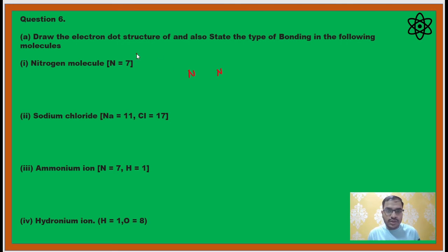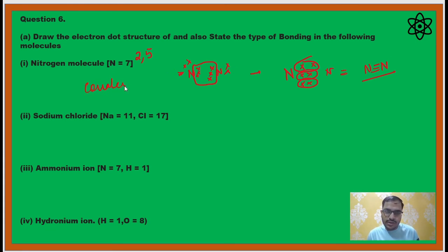Nitrogen molecule - two similar atoms. Nitrogen's electronic configuration is 2,5, so it has five electrons in its valence shell. So there will be sharing of three electron pairs between them. First pair, second pair, the third pair. The kind of bonding - it is covalent because sharing of electrons is taking place.